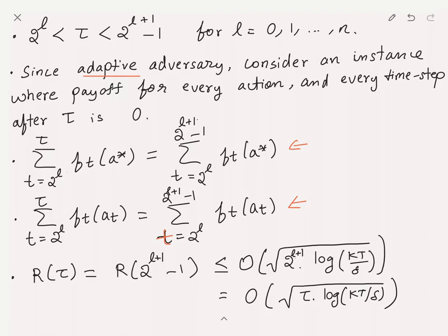This implies R(tau) equals R(2^(l+1) - 1), which is the regret at the end of the epoch. We already showed R(2^(l+1) - 1) is at most order sqrt(2^(l+1) * log(kT/delta)) with probability 1 - delta/T. Since tau is at most 2^(l+1), which is at most 2*tau, this is still order sqrt(tau * log(kT/delta)). This finishes the proof when tau lies in the middle of an epoch, using this zeroing-out trick.